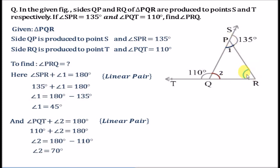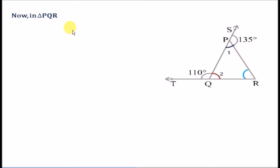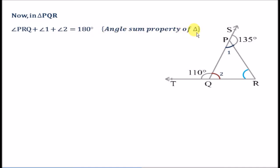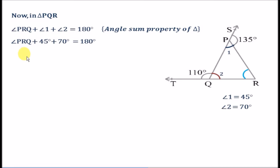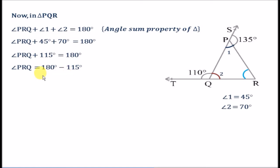We can now find the third angle, angle PRQ. In triangle PQR, angle PRQ plus angle 1 plus angle 2 equals 180 degrees because of the angle sum property of triangle. Putting the values 45 degrees and 70 degrees: angle PRQ plus 45 plus 70 equals 180, so angle PRQ plus 115 equals 180. Taking 115 to the other side, angle PRQ equals 65 degrees.